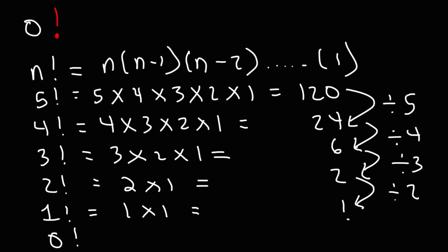So to go from 1 to the next answer based on this pattern, what do we need to do? In this case, we divide by 1. So 1 divided by 1 is 1, which means 0 factorial equals 1.